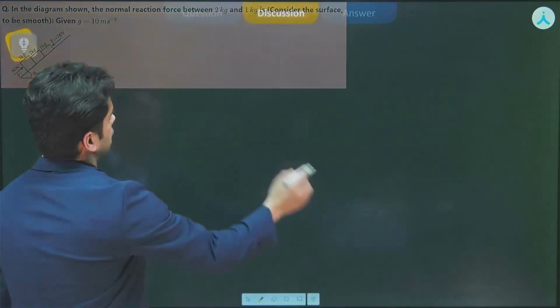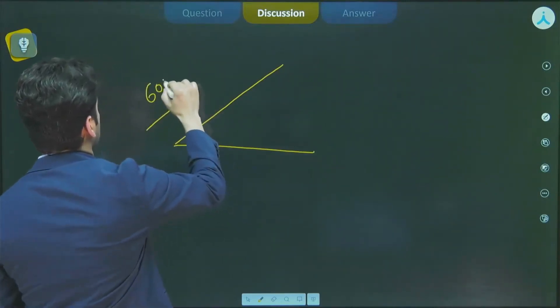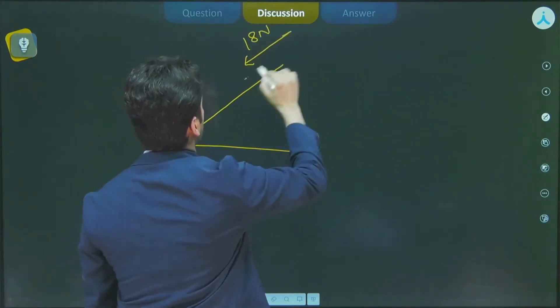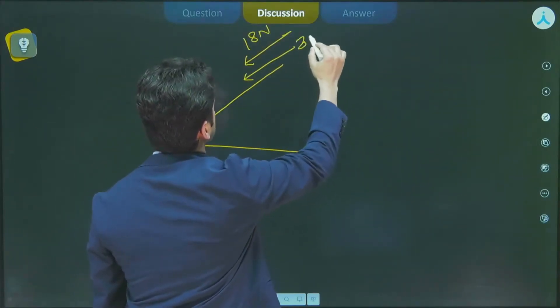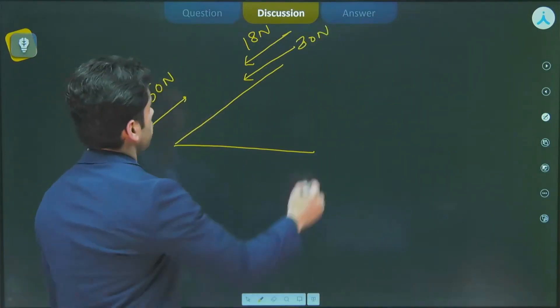So the scenario is something like this. You have an incline plane over here. 60 N is in this direction, 18 N is in this direction, and one more 30 N due to the weight of the blocks is in this direction. So what is the net force?